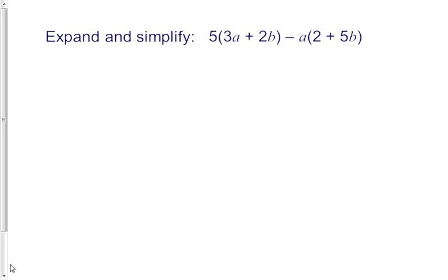Today we're going to learn about how to expand and simplify questions with one bracket, take away, and another bracket. What I'm going to do is split that question into two halves and use a grid method to multiply my first bracket and my second bracket.